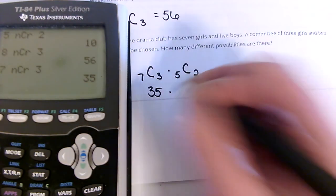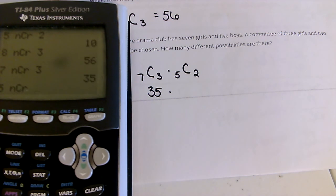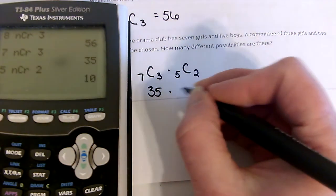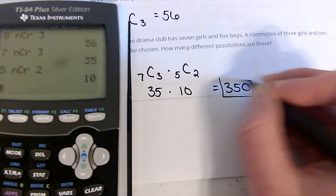And I think if you have a newer calculator, it does this a little bit nicer. I've got an old calculator. 5 choose 2. So, this is 350 possibilities.